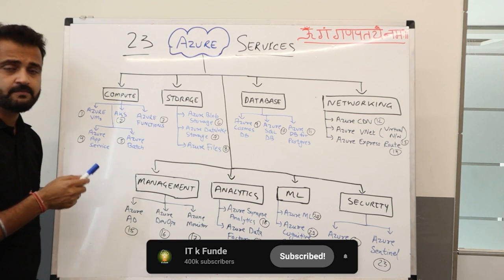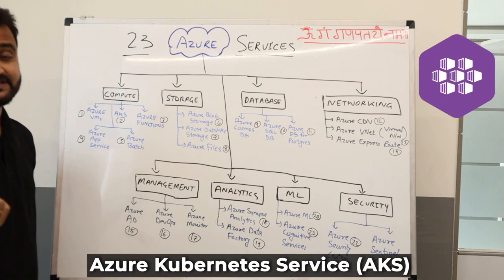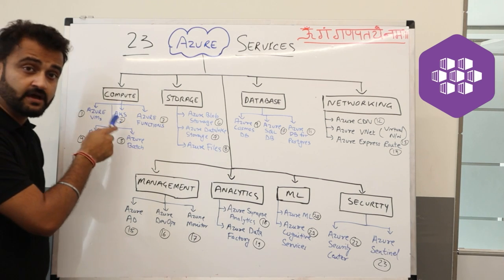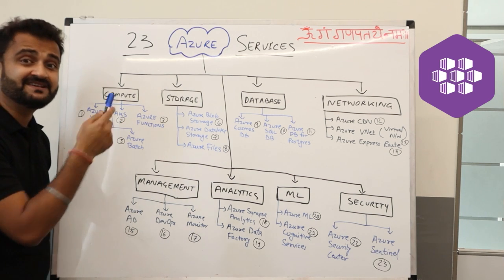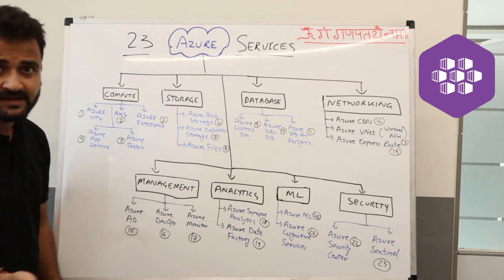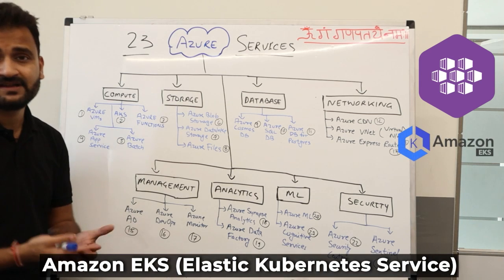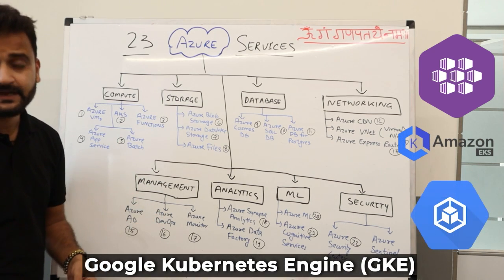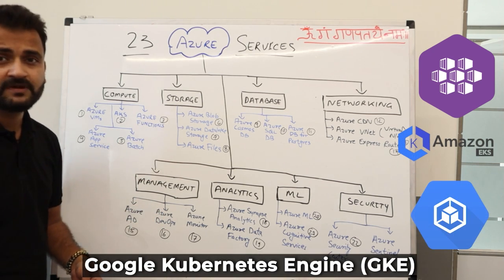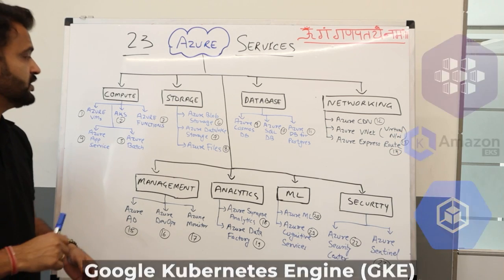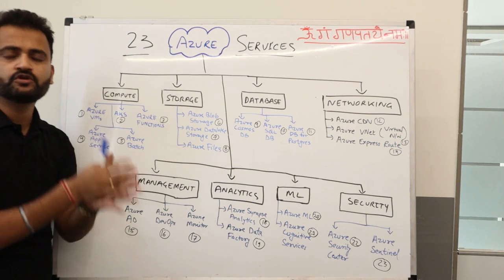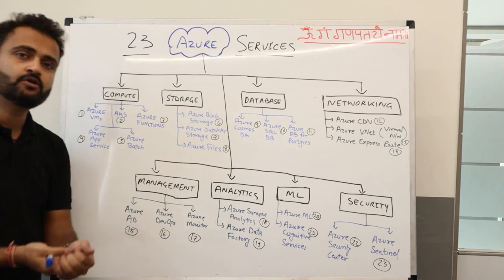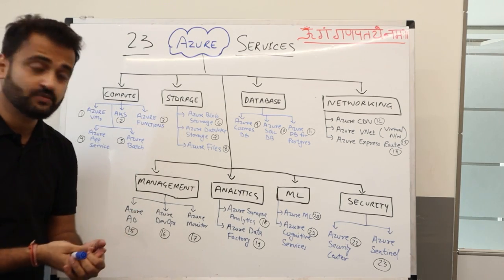The second service under compute is AKS, which is Azure Kubernetes Service. The counterpart is Elastic Kubernetes Service (EKS) in AWS, and GKE — Google Kubernetes Engine — in Google Cloud. It is a managed Kubernetes service to manage your container workloads.